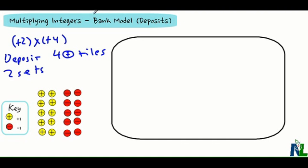I'm going to use my model to do this. If I'm depositing, that means I'm putting tiles into the bank. So I'll deposit one set of positive 4, and a second set of positive 4. This gives me two sets of positive 4 tiles.